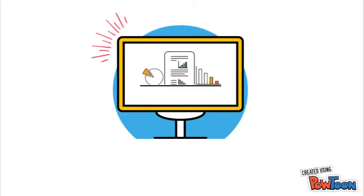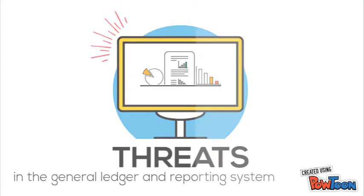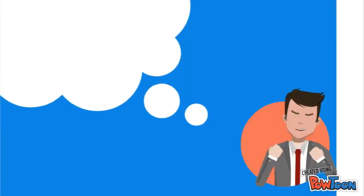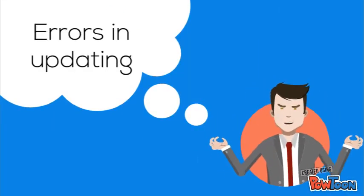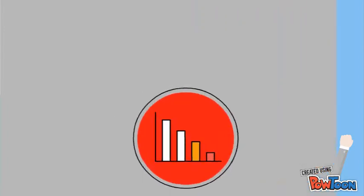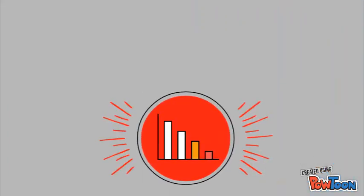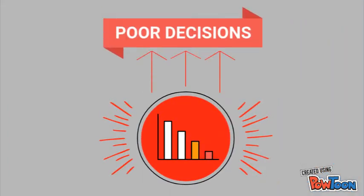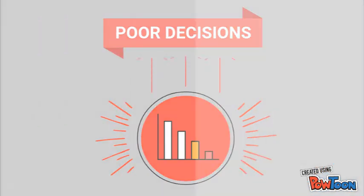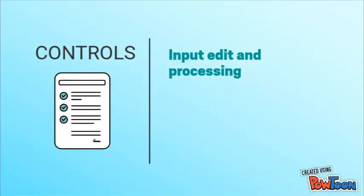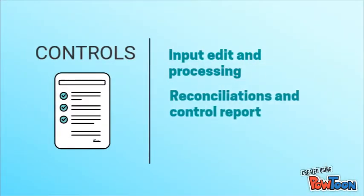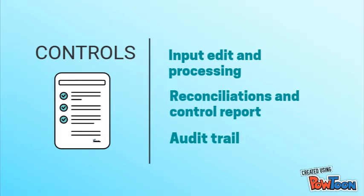There are four threats in the general ledger and reporting system. First, errors in updating the general ledger and generating reports. This can lead to poor decisions based on incorrect information. Some controls to respond to this threat would be input, edit, and processing controls, cancellations and control report, and the audit trail.